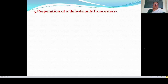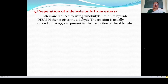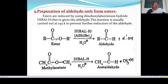That is the fifth preparation method: preparation of aldehyde only from esters. In this preparation method, esters are reduced by using diisobutyl aluminium hydride (DIBAL-H), and then it gives the aldehyde. The reaction is usually carried out at 195 Kelvin to prevent further reduction of the aldehyde. In this reaction, the ester group is R-C(=O)-O-R.